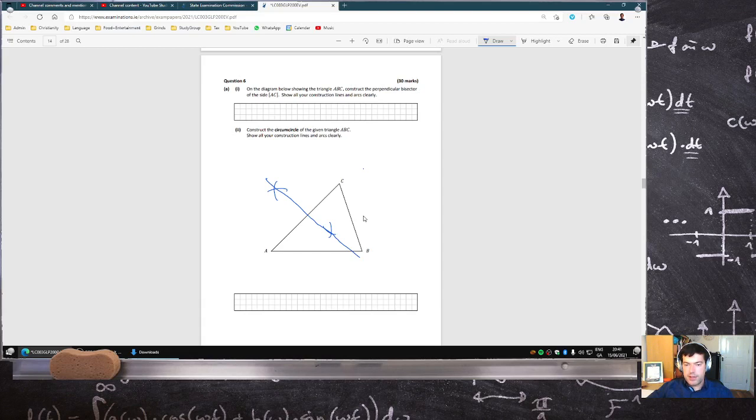The circumcircle is the circle that circumnavigates the triangle. And so these sides are now chords. And so if you repeat the bisecting process on one of the other sides...